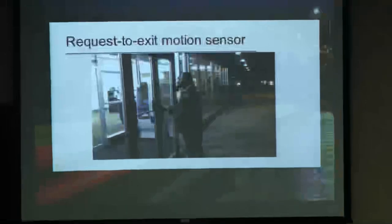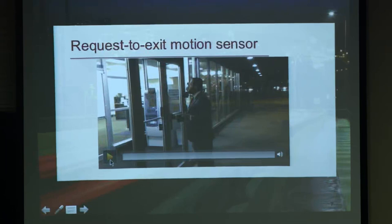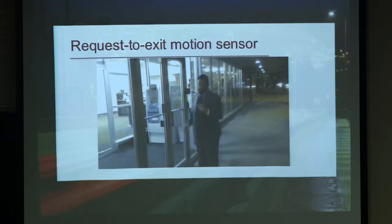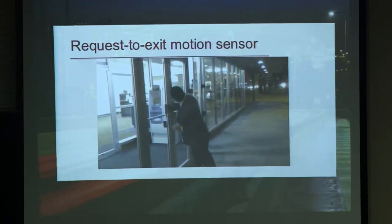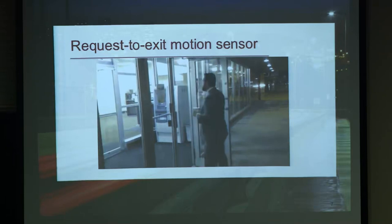I want to show you a clip from a friend of mine, Deviant Ollam. This is about the classiest way you can breach physical security. He's wearing a suit, got a glass of whiskey, and he's going to show you how to break into a bank with whiskey. The door is locked, there's a request-to-exit motion sensor on the other side. He blows some whiskey through the door, which triggers the motion sensor, unlocks the door, and now you're in — and the classy way too. The problem here is that the motion sensor — if you can get anything under there, you can trigger it.